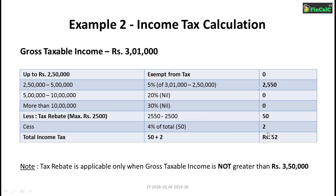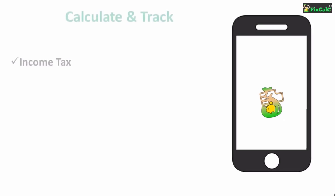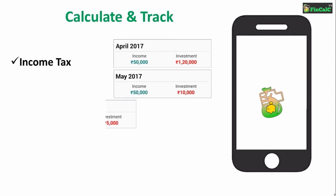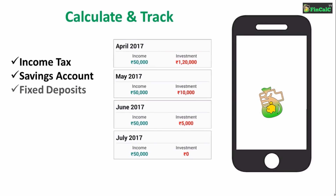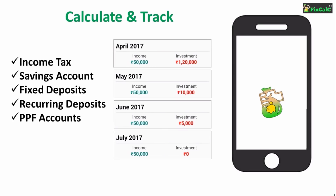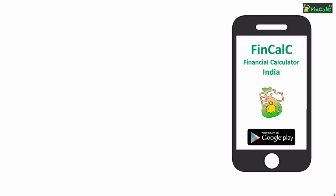So ₹52 is the total income tax to be paid in this example. This is the way income tax is calculated for the financial year 2018-19. Before wrapping up, I'd like to introduce our free Android app Finkelsey — a financial calculator app exclusively for the people of India that helps you calculate income taxes, track expenses on a monthly basis, and also calculate interest on savings accounts, fixed deposits, recurring deposits, PPF accounts, mutual funds, and many other Indian savings schemes. Don't forget to download Finkelsey — the link is in the top right corner and in the description.